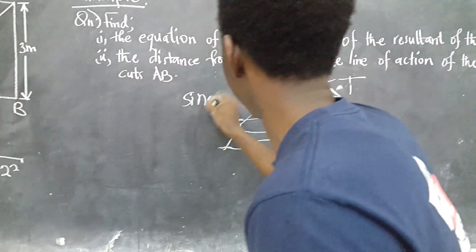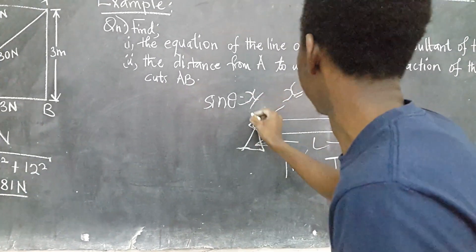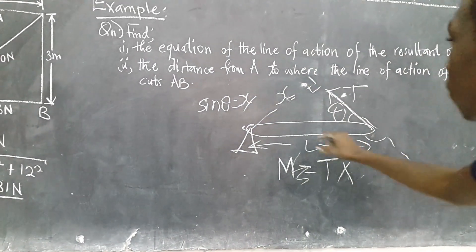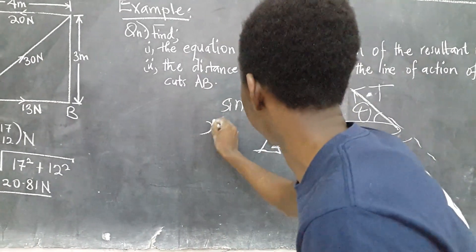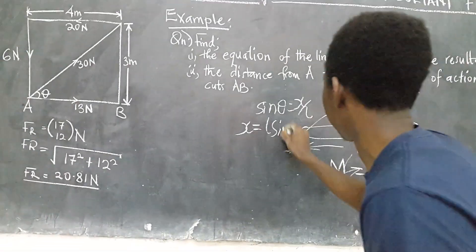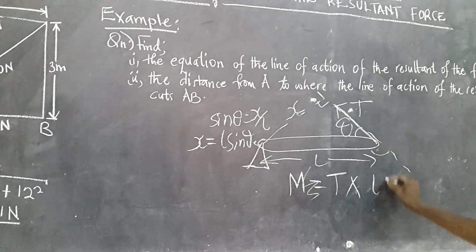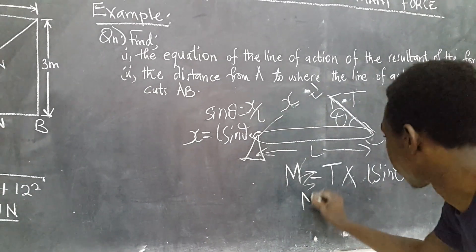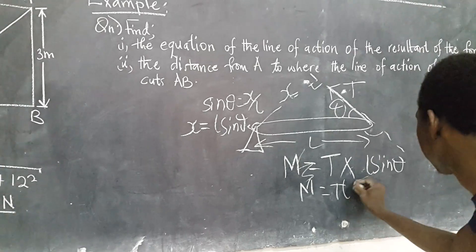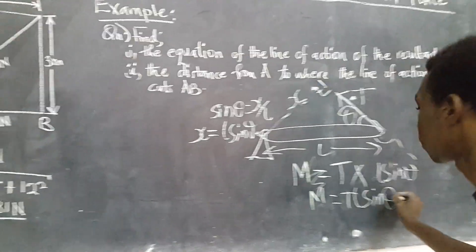consider that sine of theta is equal to X out of L. So, implying that the perpendicular distance X is L sine of theta. So, that means the moment will be M is equal to T times L sine of theta, meaning that M is TL sine of theta.